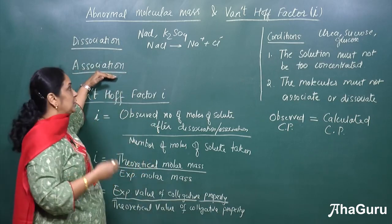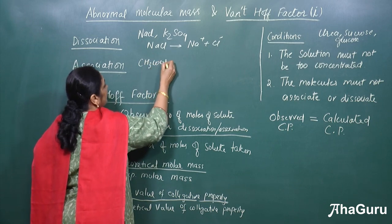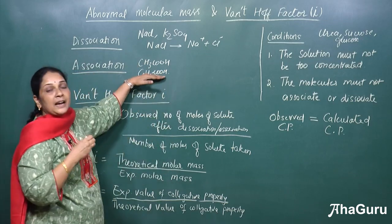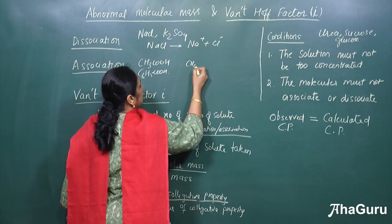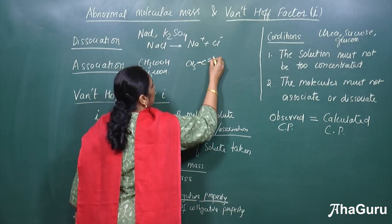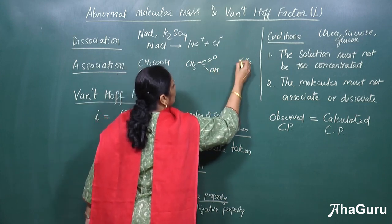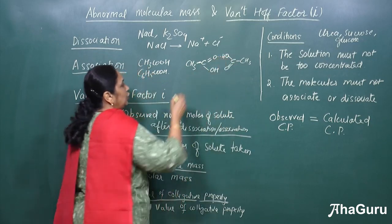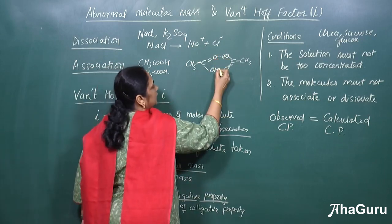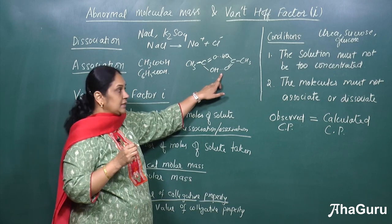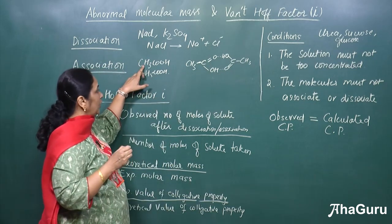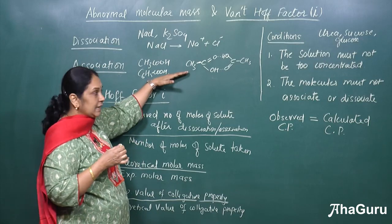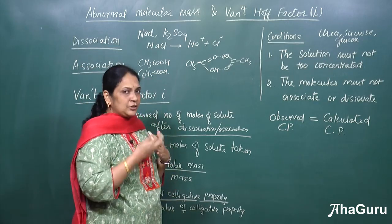When we talk about association, examples are acetic acid and benzoic acid. If we take molecules like these, they undergo association. Between two acetic acid molecules — CH₃–C(=O)–OH — there is hydrogen bonding interaction. Because of this hydrogen bonding, one molecule appears as half a molecule, because two molecules have associated together. In such cases, the colligative property will vary — it should actually decrease.